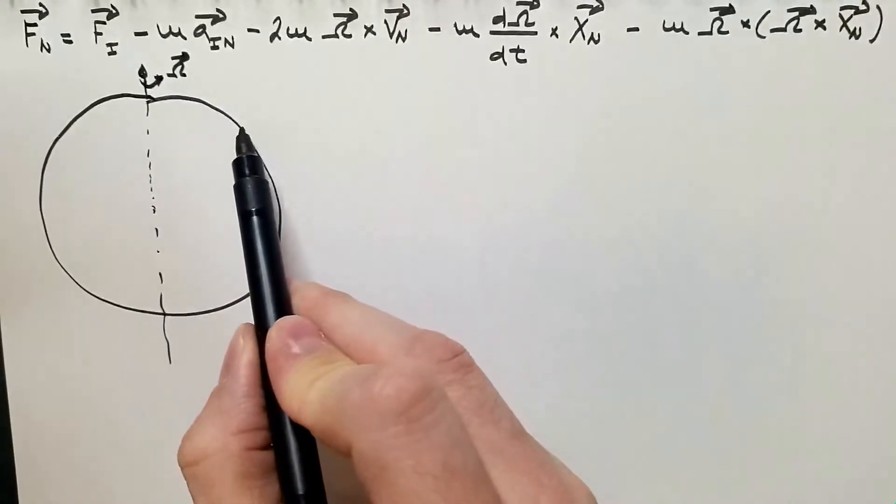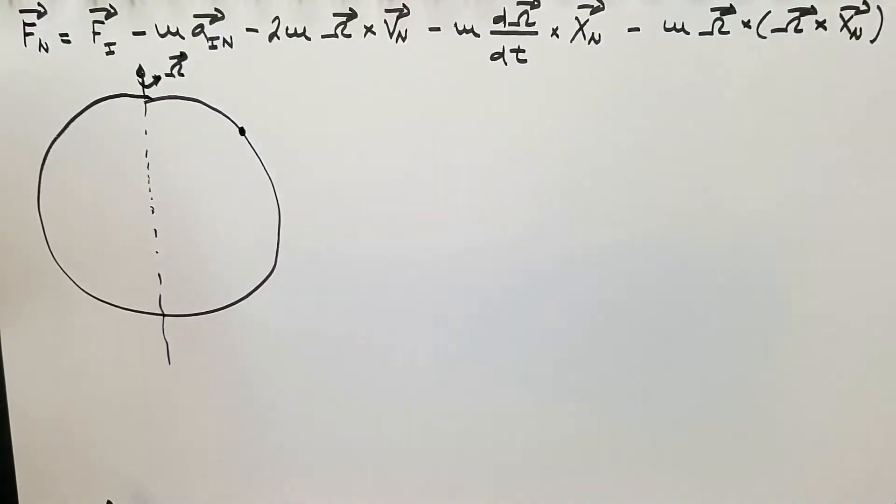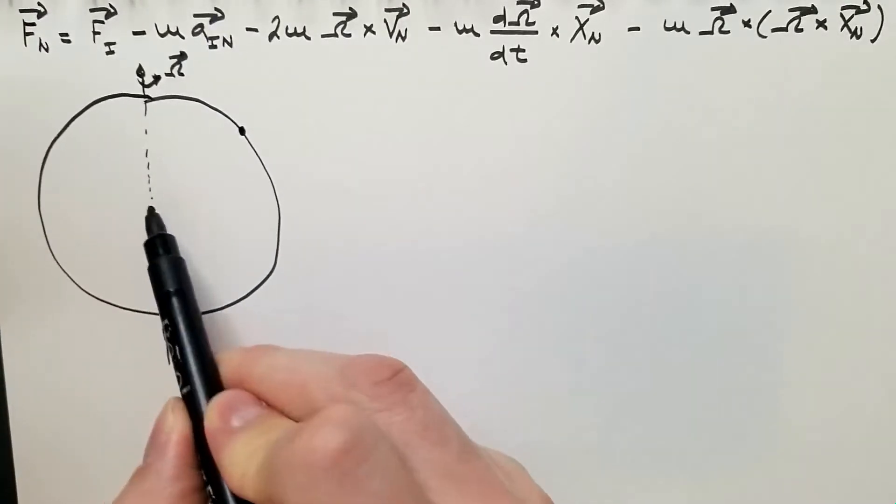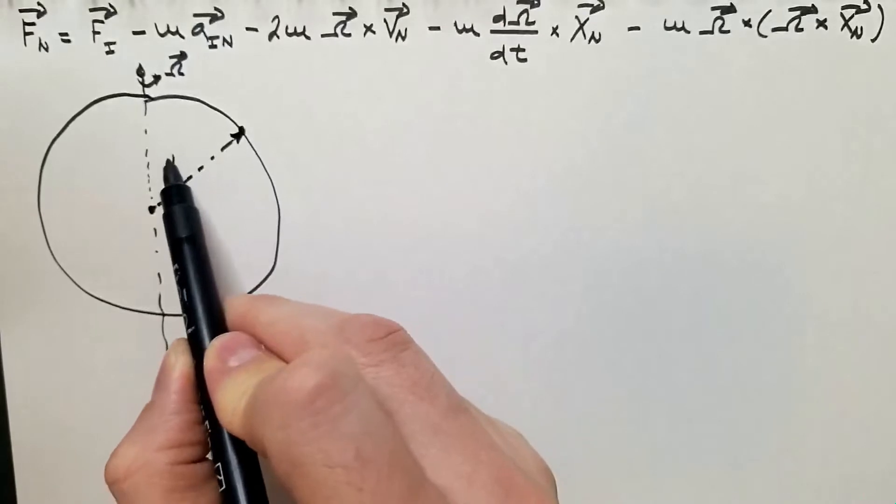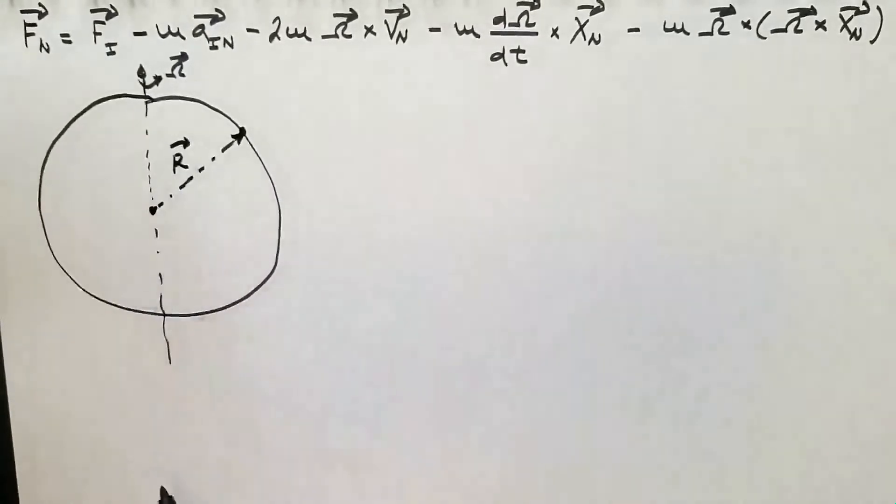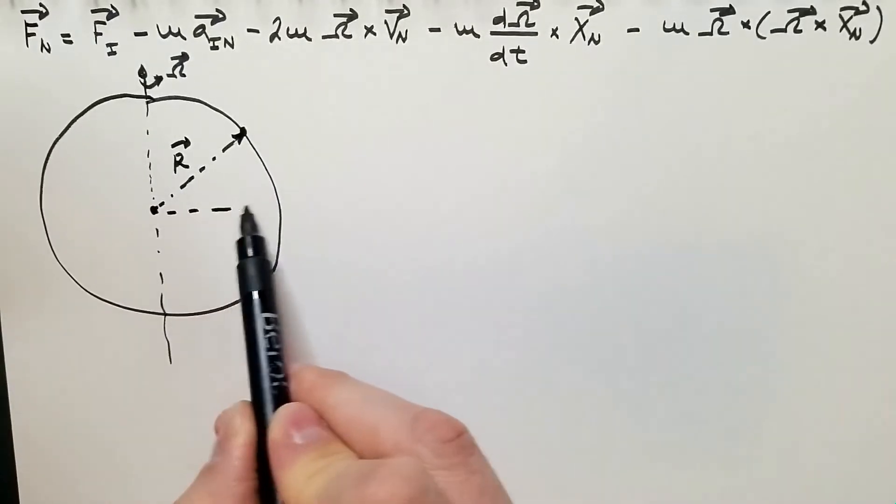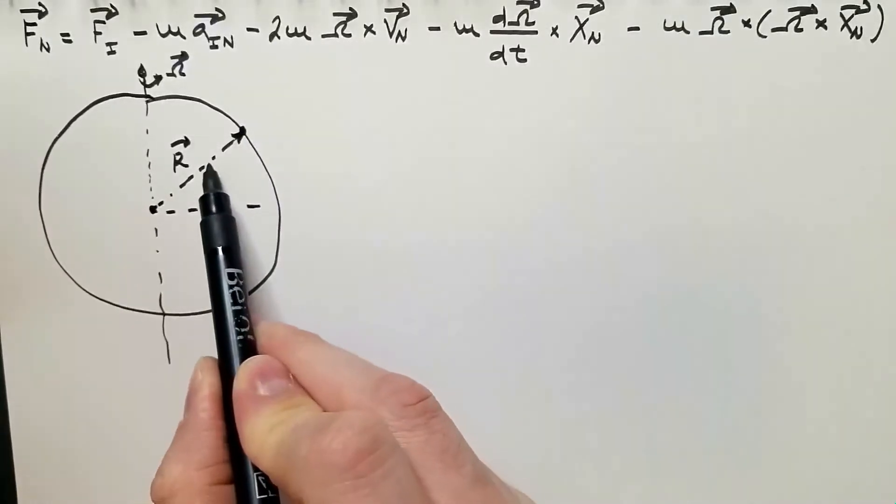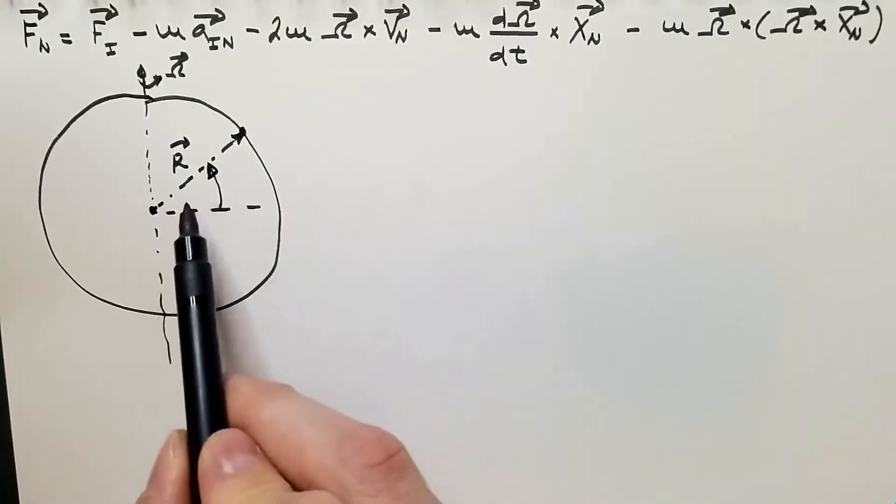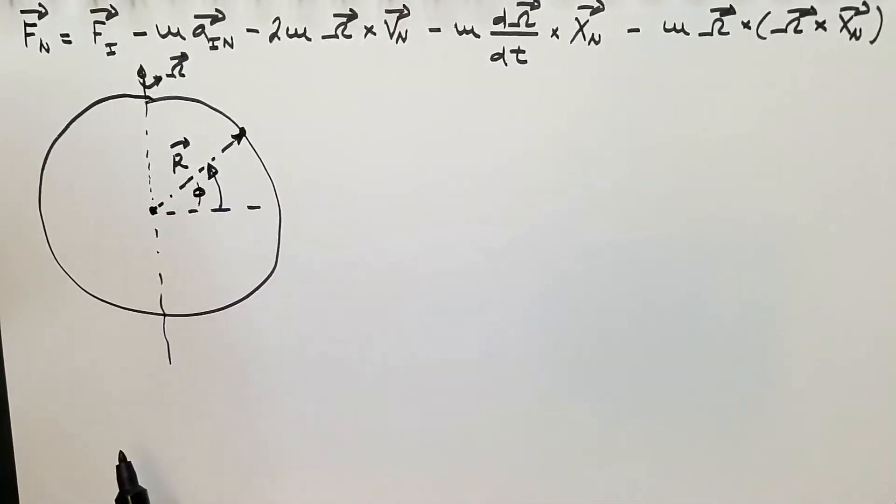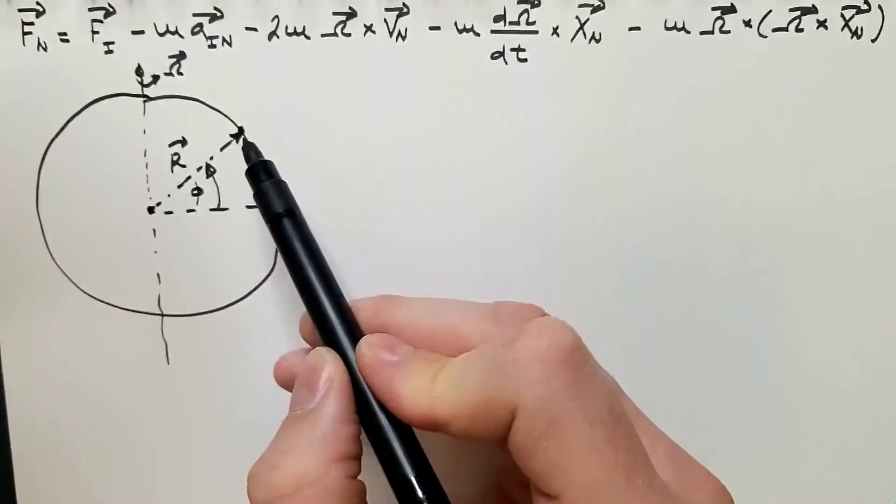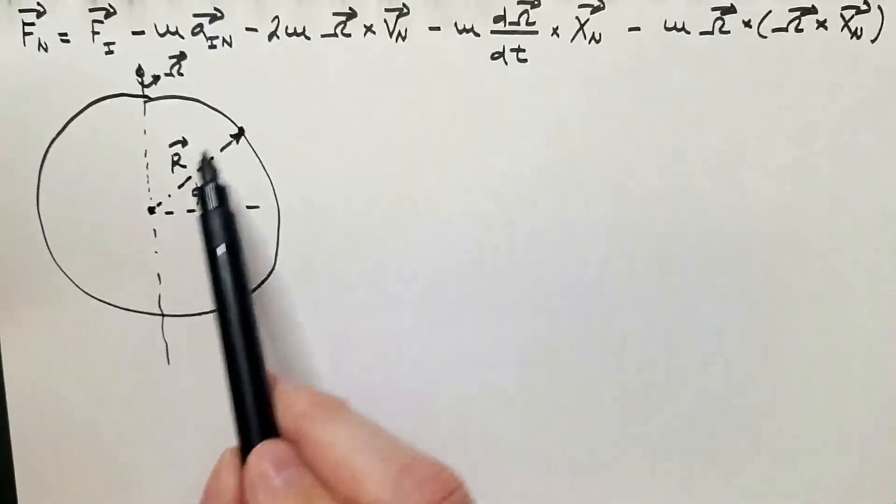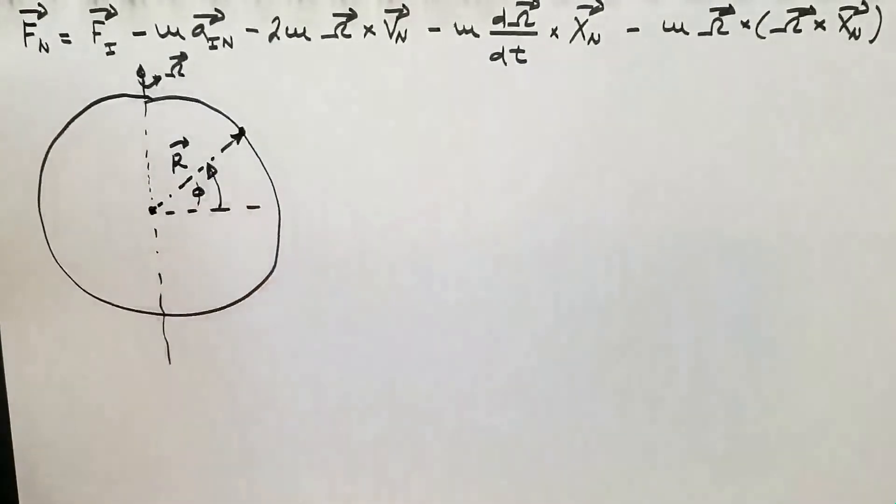I will take a point here on the surface of the Earth. From the center of the Earth, the distance to that point is r, radius of the Earth, and this point also has latitude phi.